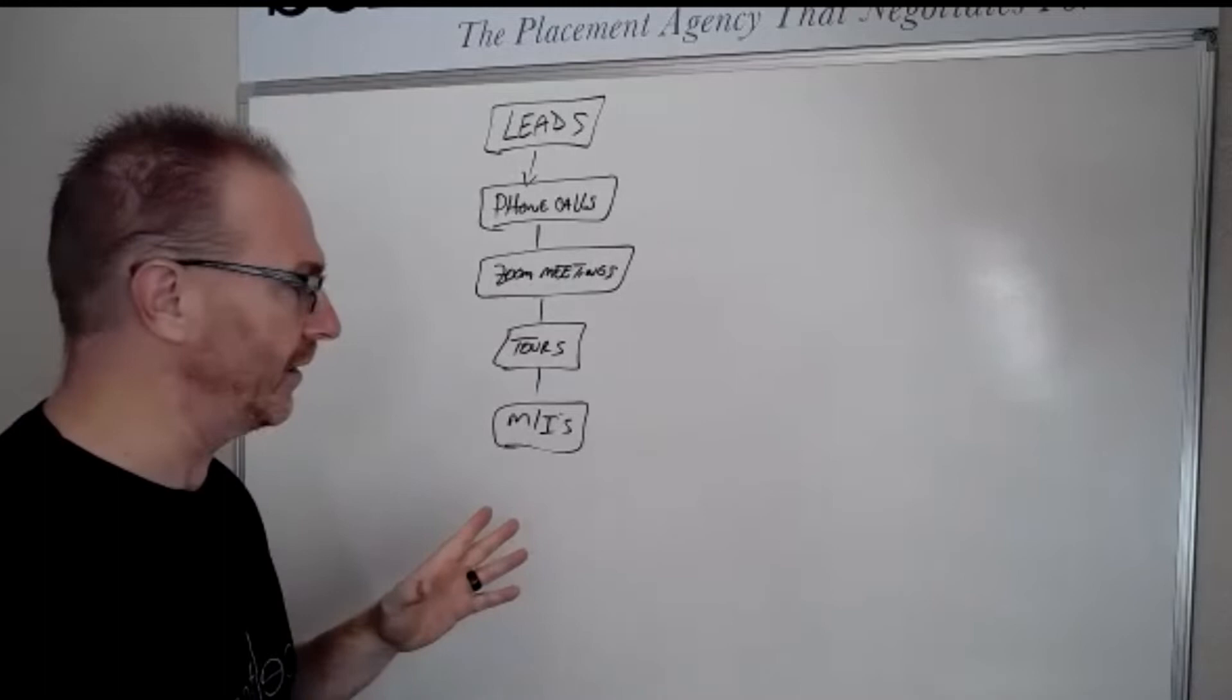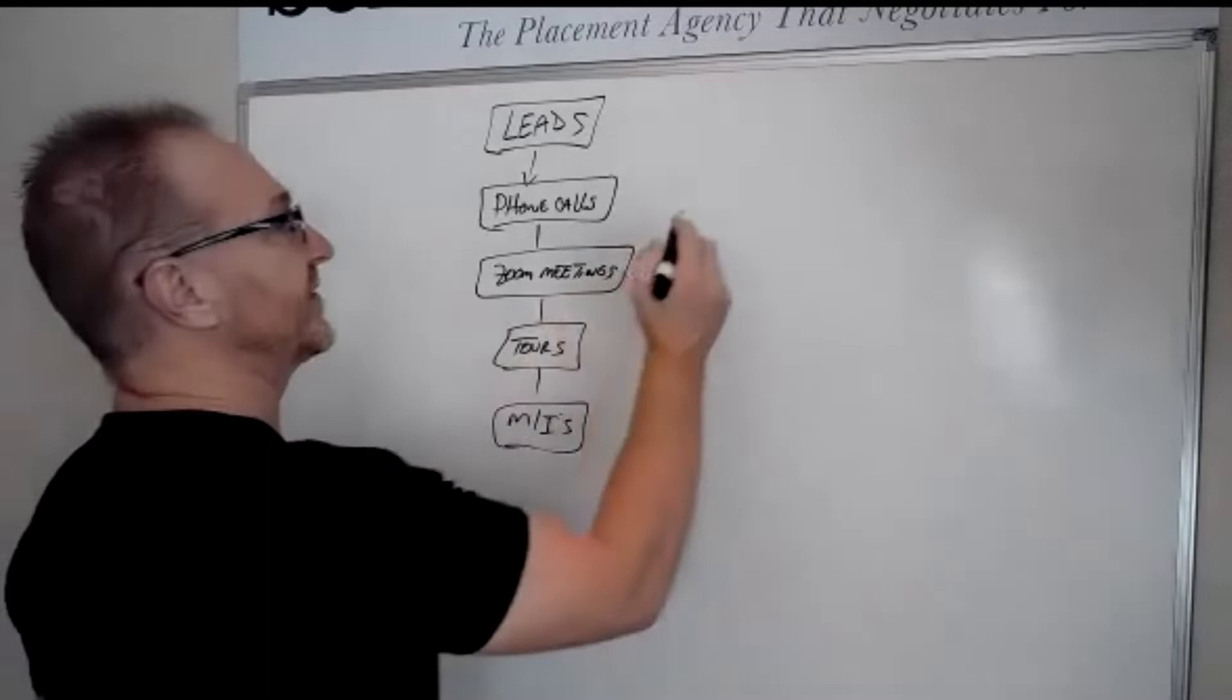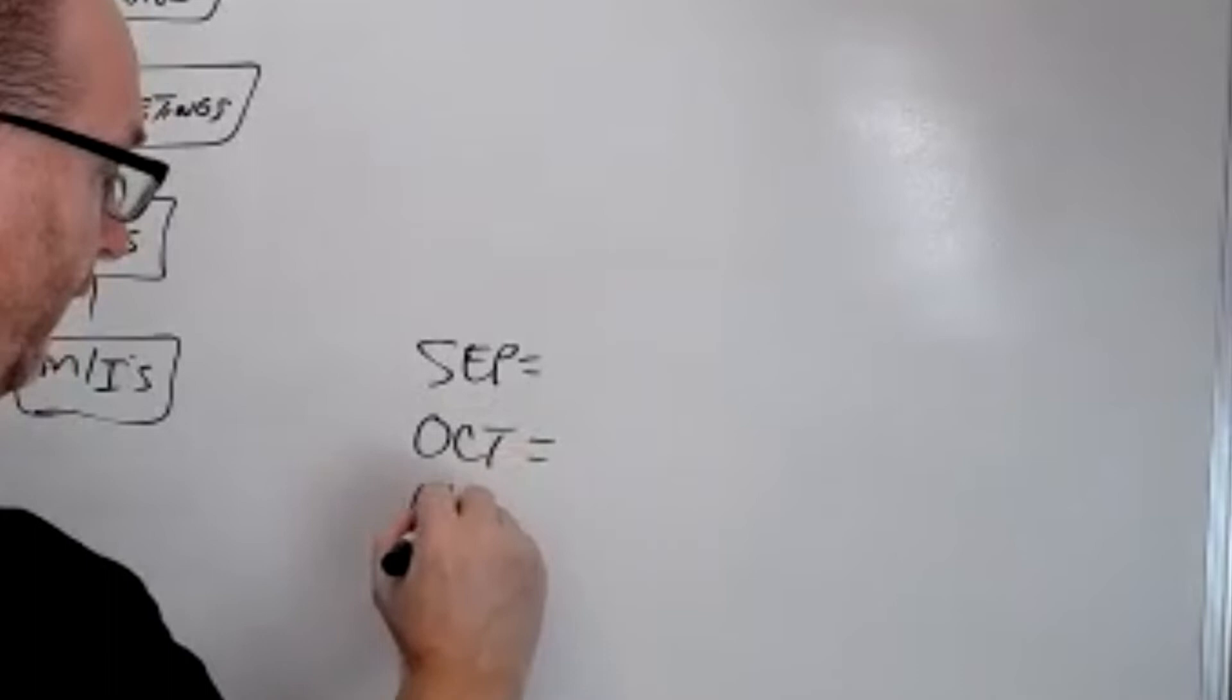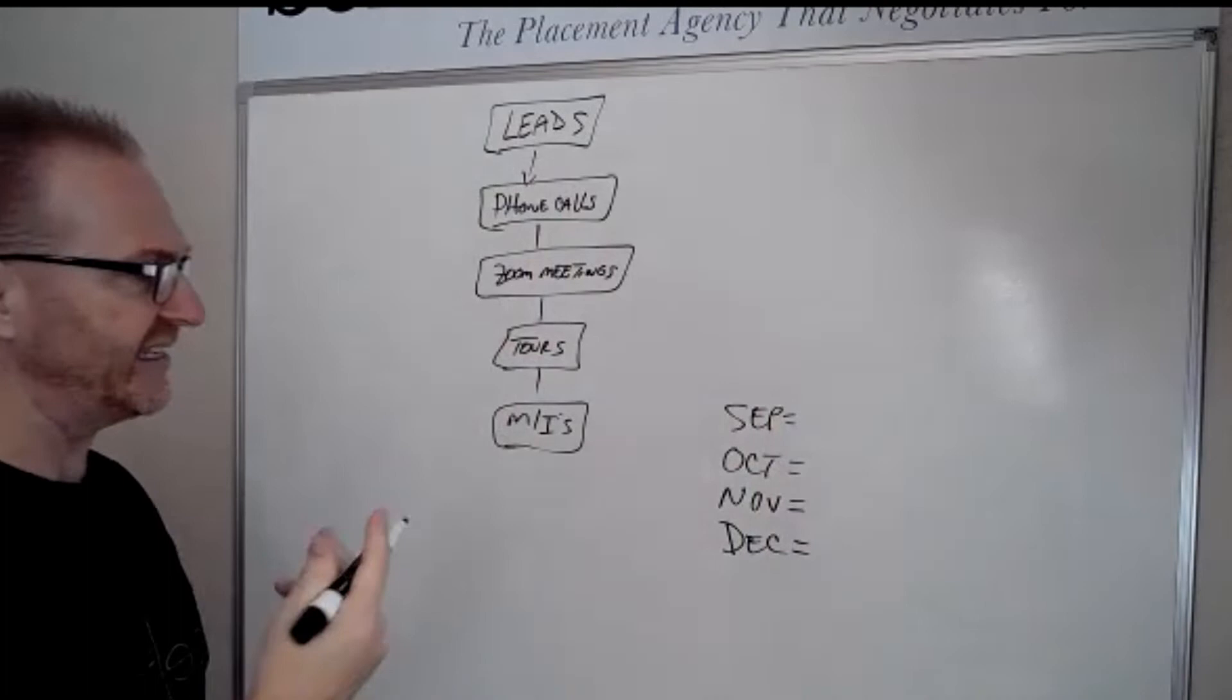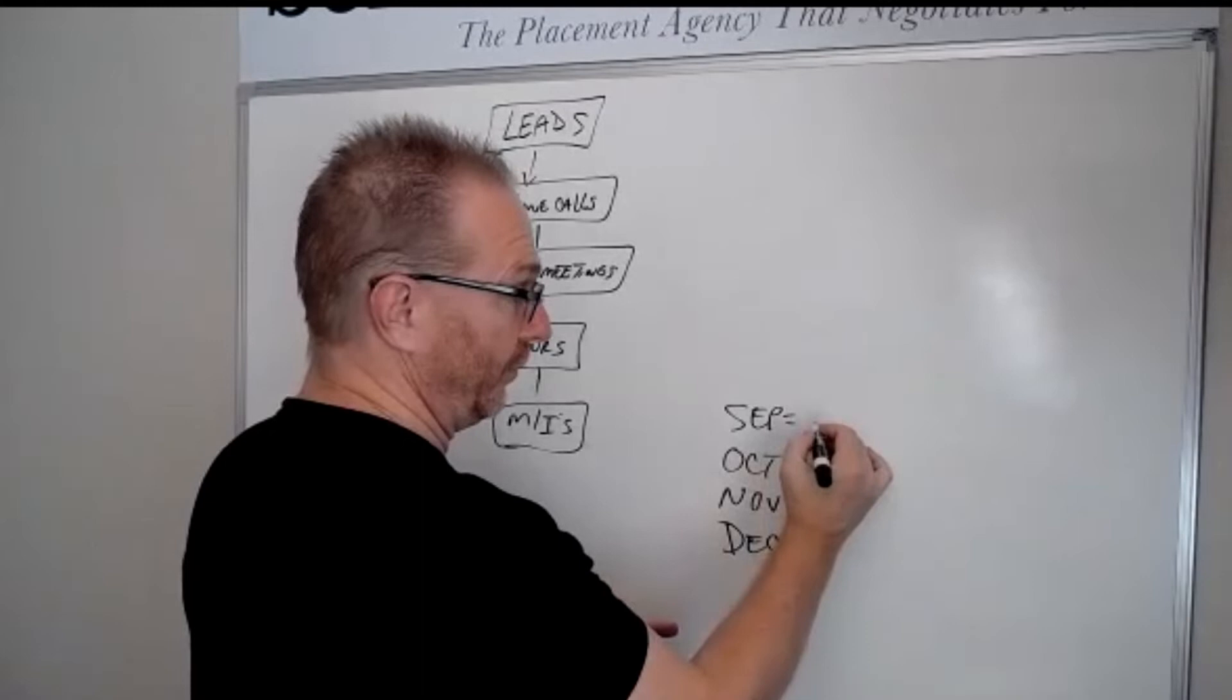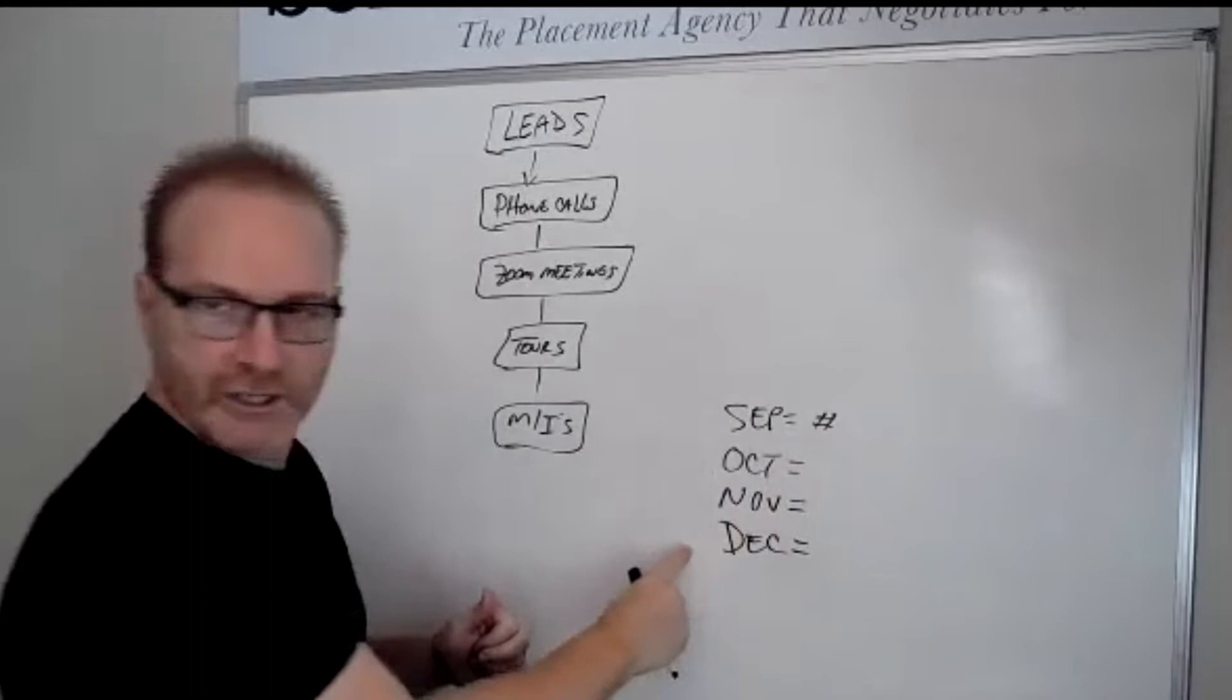But ultimately right now, we're in September. So you need to write down, I'm in September and I want X number of move-ins for September, October, November, and December. I would do these four months. Now, we're already like 10 days, 11 days into September. So this might not be that great of a number, whatever that number is. Right. I still would put a number.